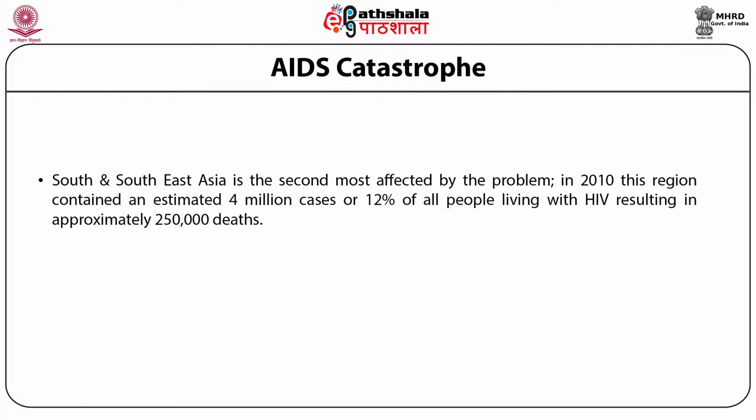South and Southeast Asia is the second most affected region. In 2010, this region contained an estimated 4 million cases, or 12% of all people living with HIV, resulting in approximately 250,000 deaths. Approximately 2.4 million of these cases were in India.